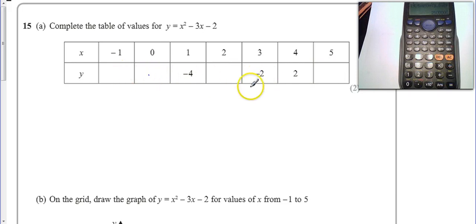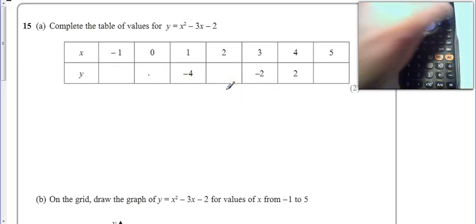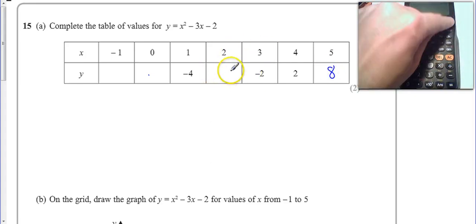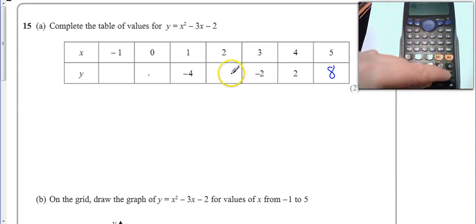Okay, so we've just got to put 5 in. Let's put 5 squared minus 3 times 5 minus 2. We'll come up with the answer 8 in here. Same thing with 2, 2 squared minus 3 times 2 minus 2 gives me minus 4.